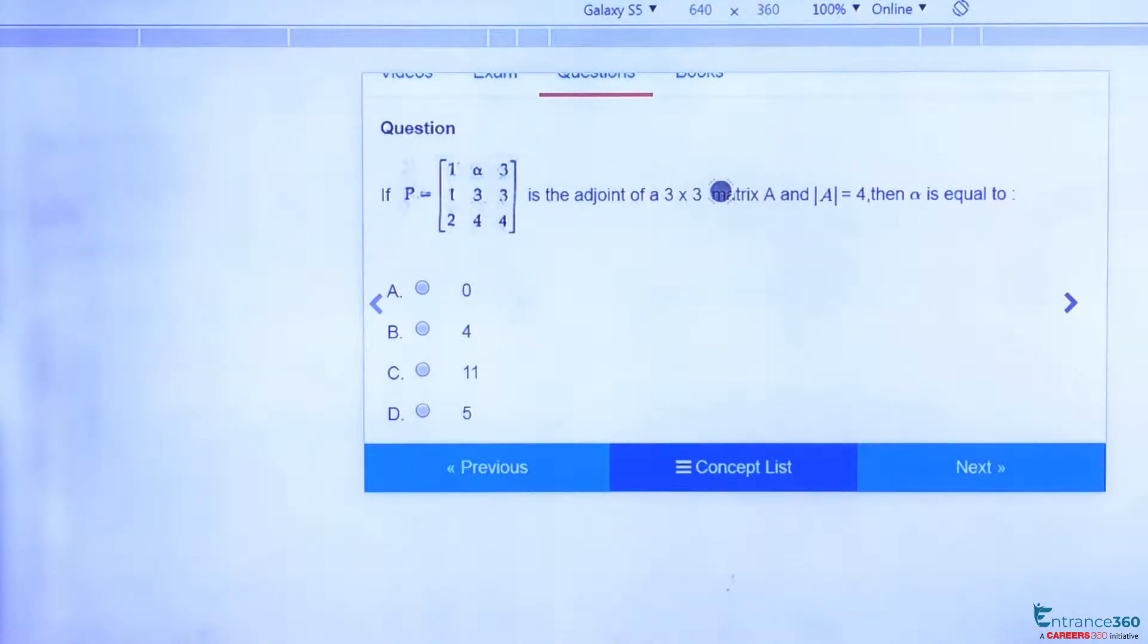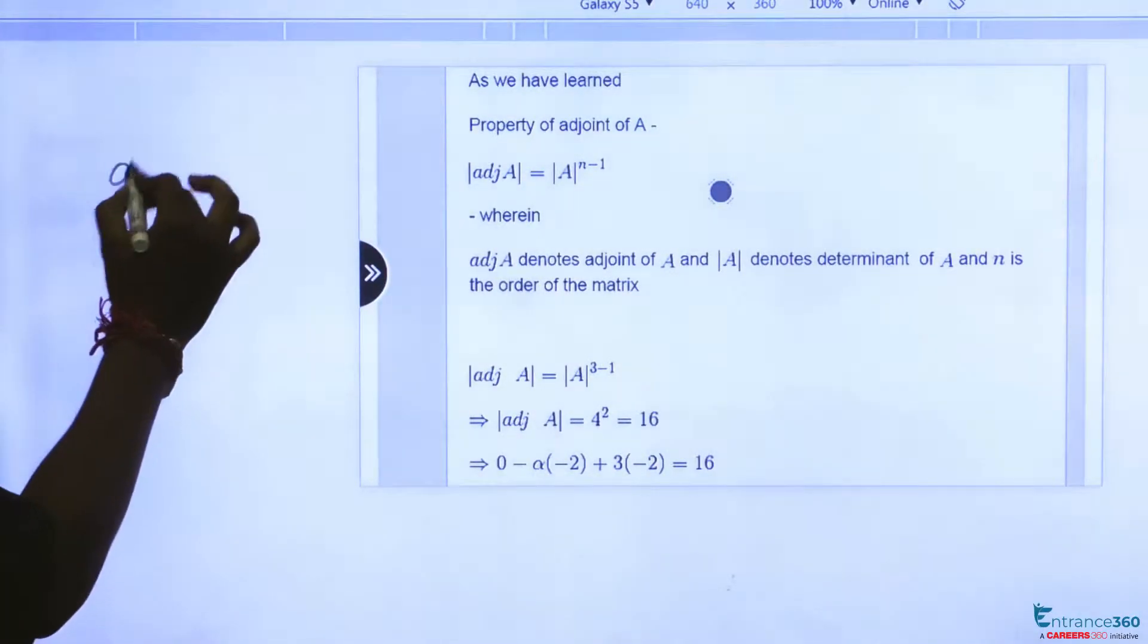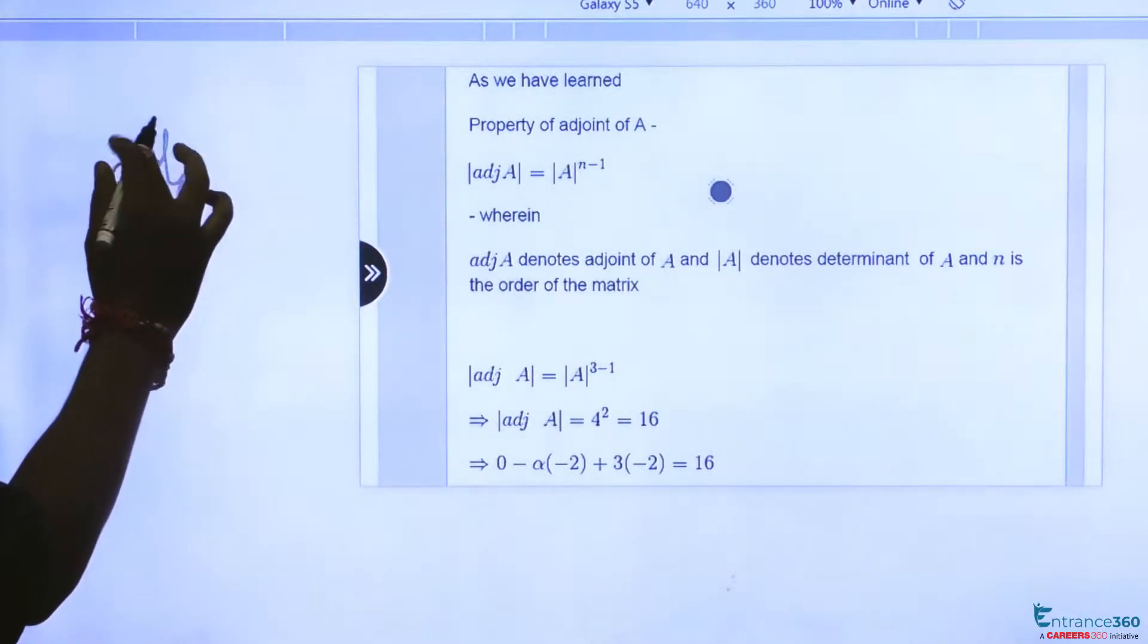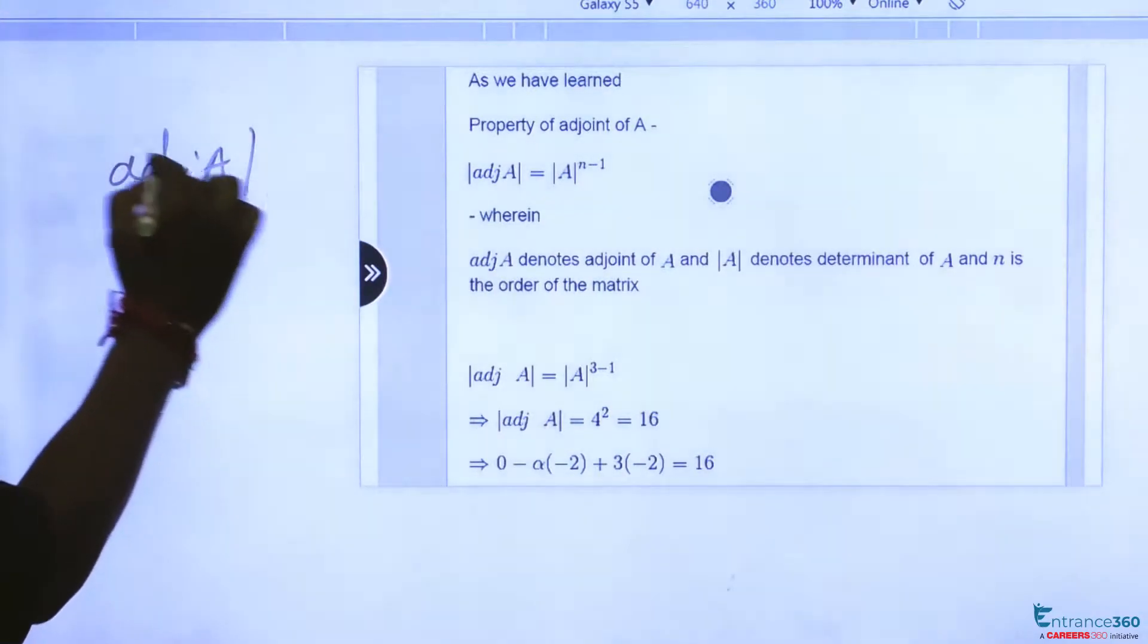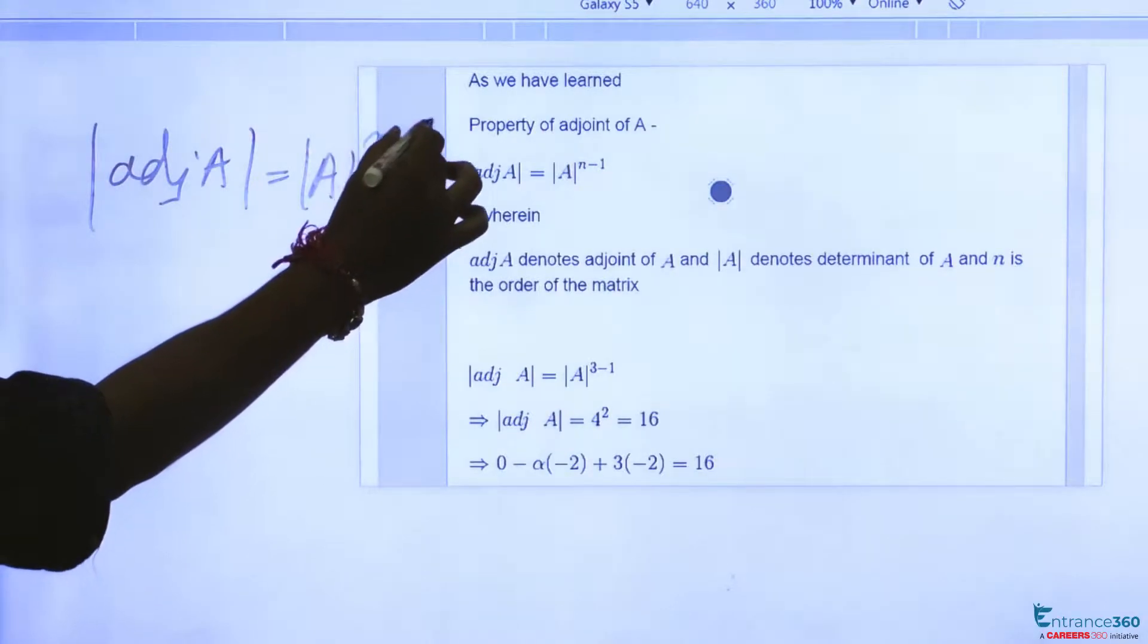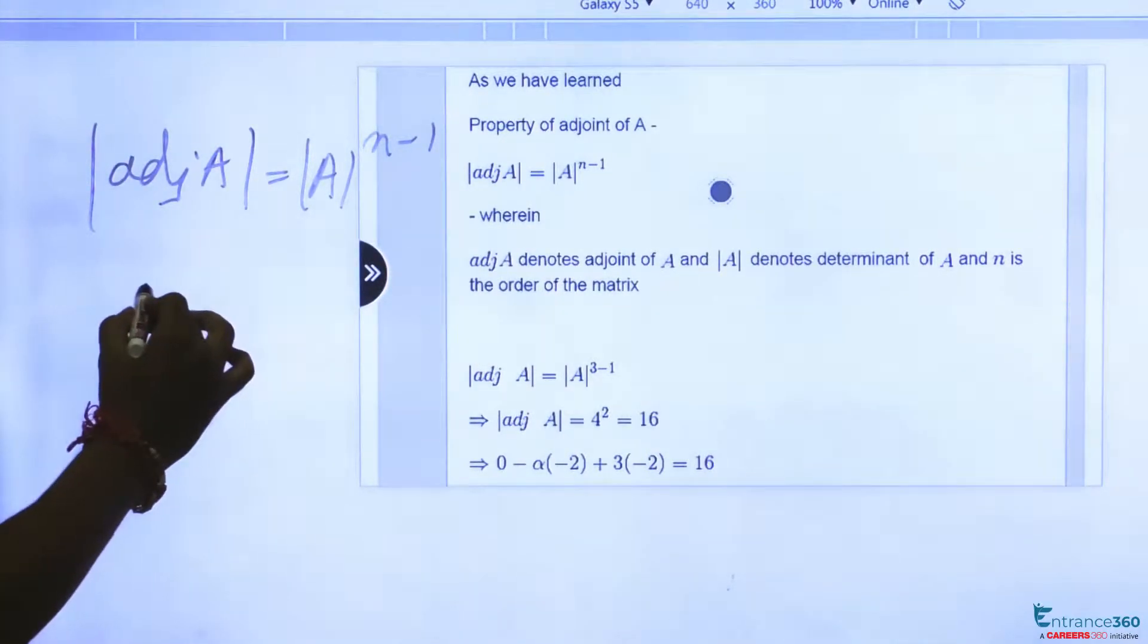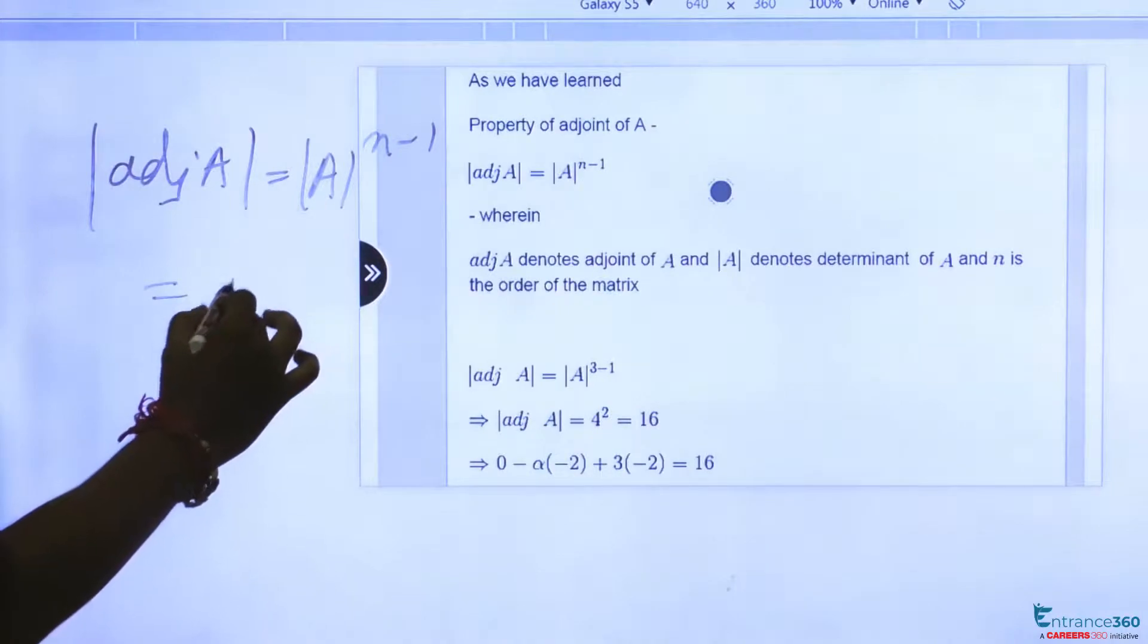So what concept we will be using here? We will be using the concept of |adj A| = |A|^(n-1), where n is the order of the matrix here.